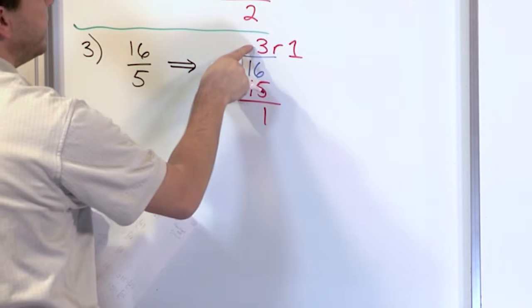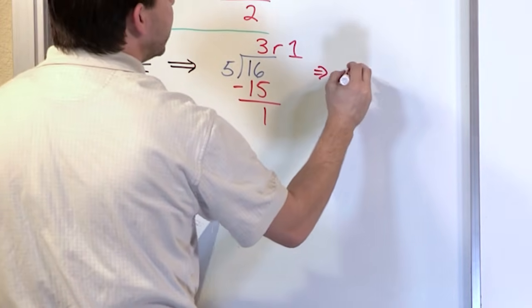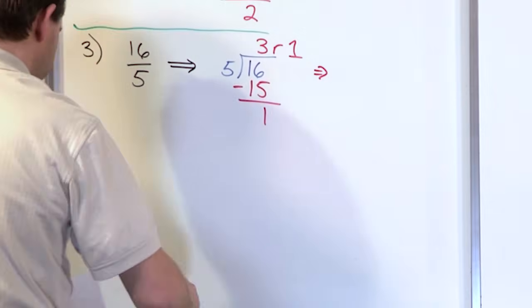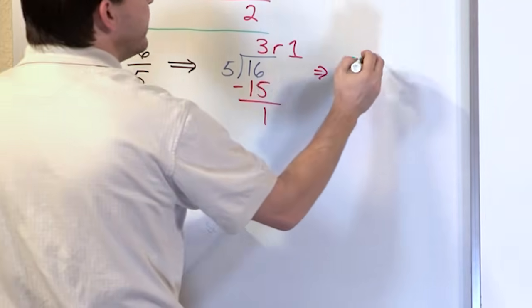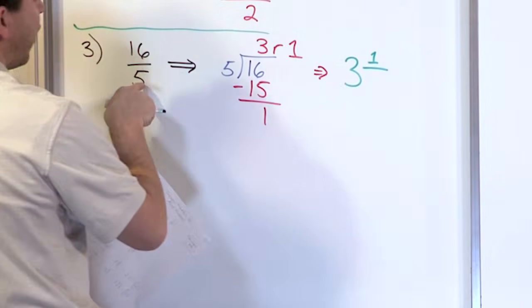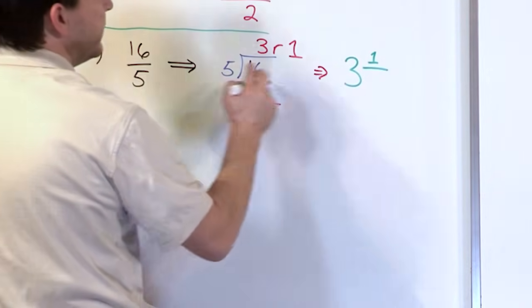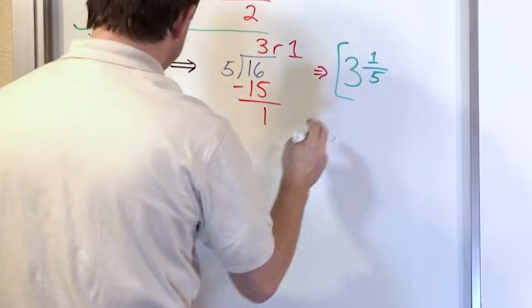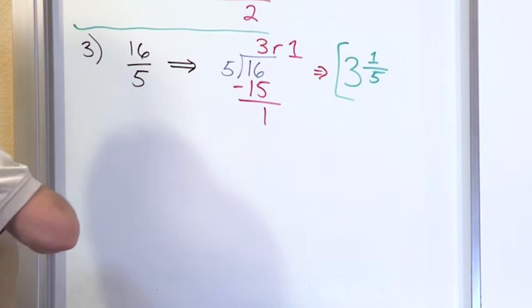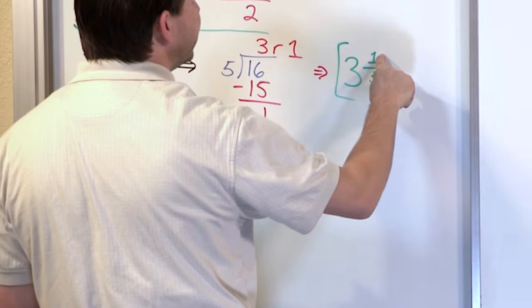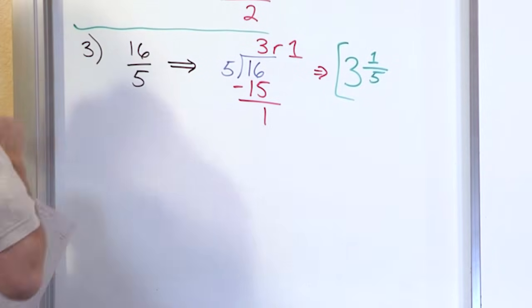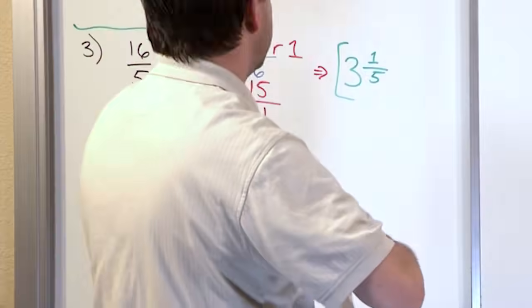Since this division means it can go 3 whole times, the answer is going to be a big 3. The remainder is 1 and it goes over the original fraction denominator, which is 5—3 and 1 fifth. To check your work: 3 times 5 is 15 plus 1 is 16. 16 fifths.